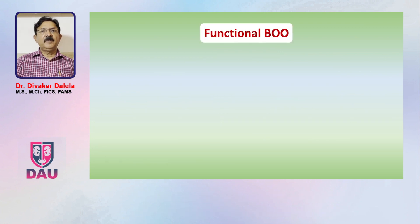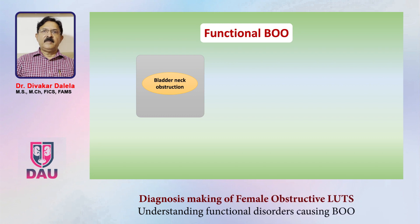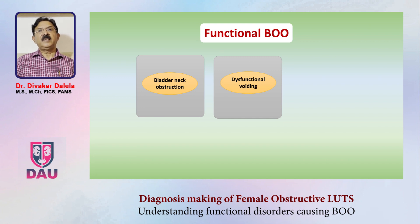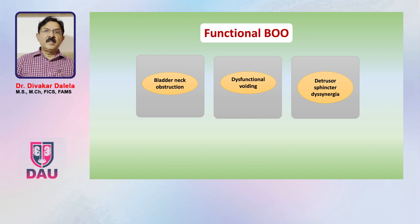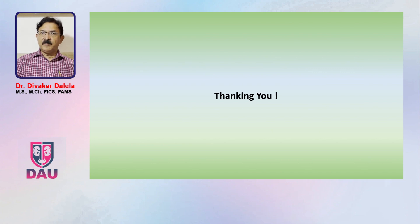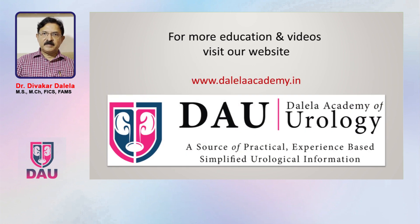To sum up, the three functional bladder outlet obstruction conditions are: first, bladder neck obstruction; second, dysfunctional voiding, where the external sphincter is not relaxing appropriately but there is no neurological disease — it is on a purely psychogenic basis or a problem in the local reflex between bladder and sphincter; and third, detrusor sphincter dyssynergia, where there is a clinically visible neurological disease. I hope you found this information simple and useful for understanding functional female bladder obstruction. Thank you very much; if you have any questions or comments please write to my email.